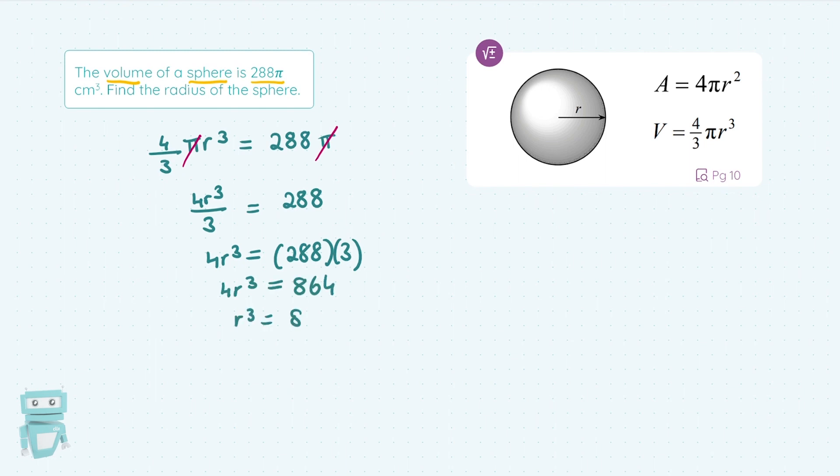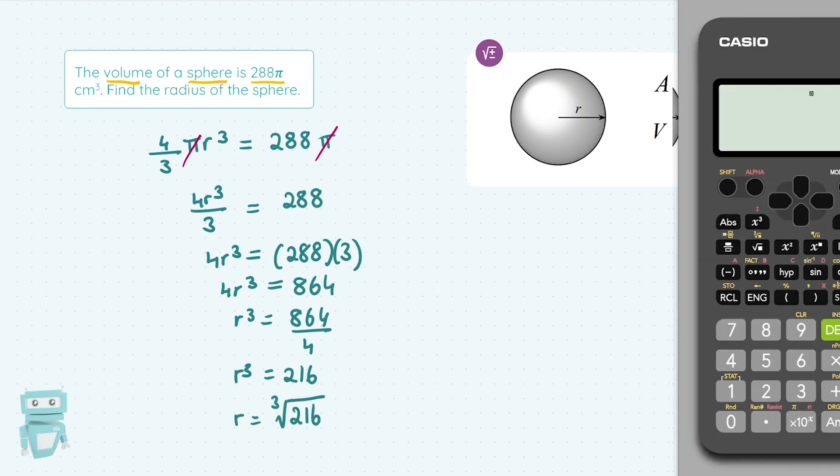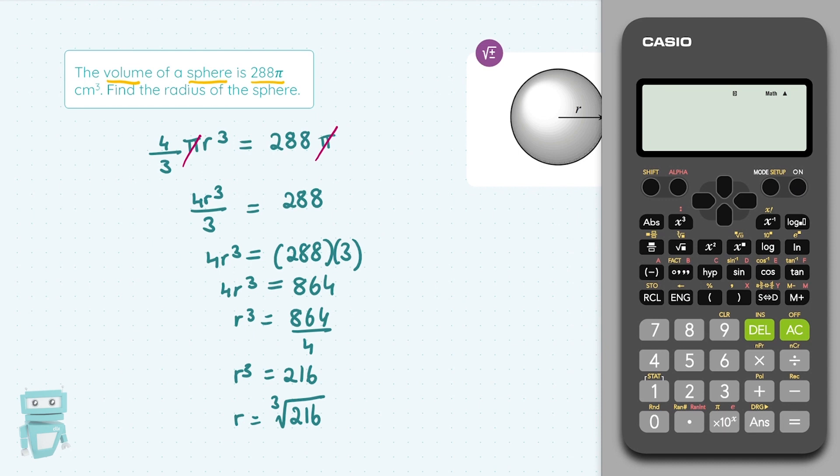To work out r³ now, divide by 4. And if you work that out, you get 216. Now to work out r, it's just simply a matter of the cube root of that. I'll show you that in the calculator. I'll actually show you at the stage of 864 over 4.